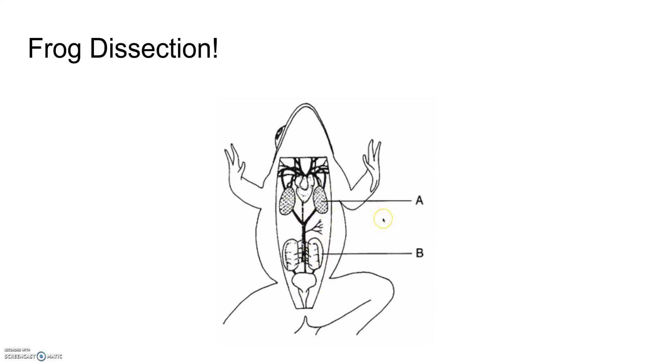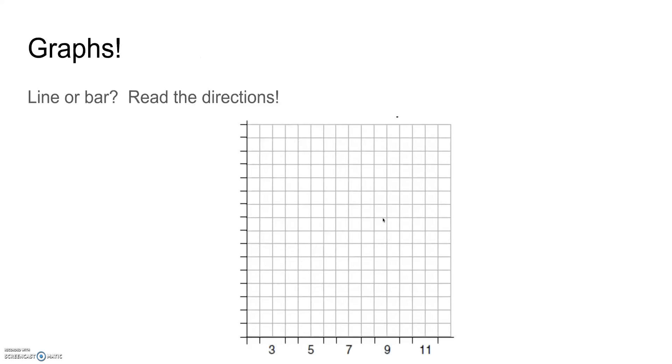You will have a graph. I'm not gonna say if it's a bar or a line graph but you have to make sure that you do the scale correctly. Remember that these first lines are zeros - this is a zero. You have to figure out your data table and how much you're going to space. This is the part where a lot of students have difficulty.